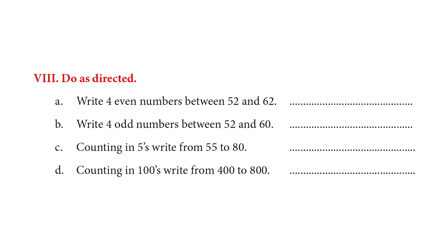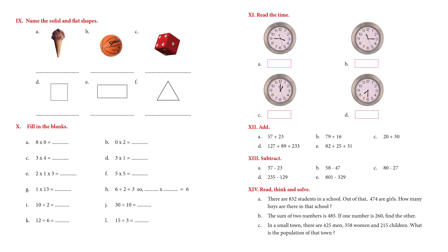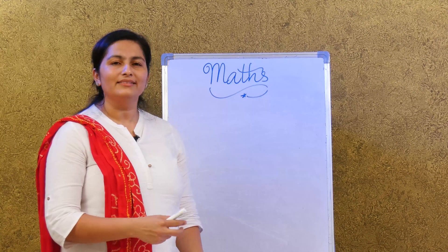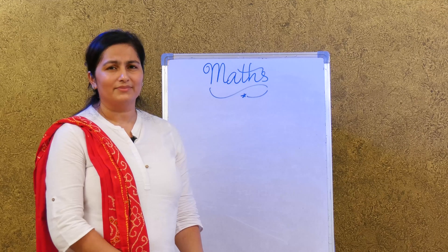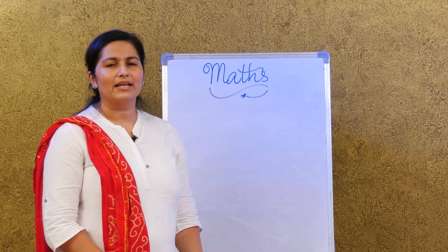This next part is easy since you already know it well. Write four even numbers between 52 and 62 — go ahead and finish that. Then name the solid and flat shapes. Fill in the blanks with multiplication — that's something we learnt last year. Read the time, add, and subtract — we will have two units on those this term. I hope you finished all the exercises; that was a good review of what you learned last year. That brings us to the end of Unit 1.